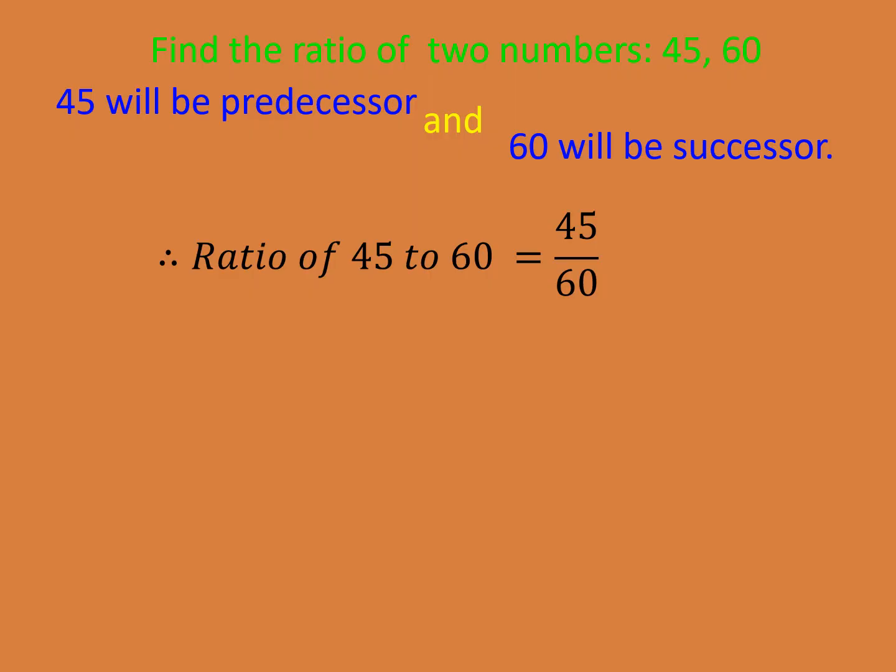45 is in the numerator and 60 in the denominator. Now we need to reduce it. 60 is 5 times 12 and 45 is 5 times 9. Further, when I reduce, I will get 12 is 3 times 4 and 9 is 3 times 3. You will find that I can divide by 5 and 3.